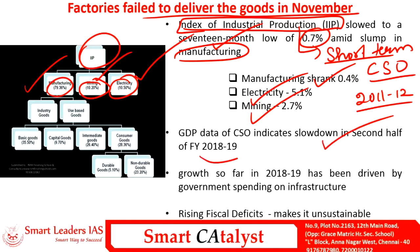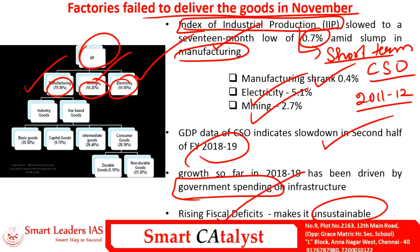The CSO data shows a slowdown in the second half of financial year 2018-19. It is to be noted that so far, growth has been majorly driven by government spending. However, more government spending will definitely increase the fiscal deficit, which can make the financial health of the economy unsustainable.